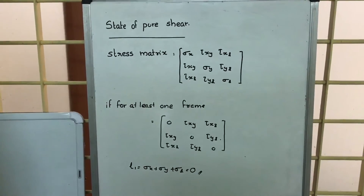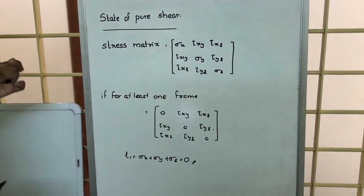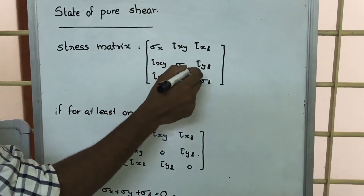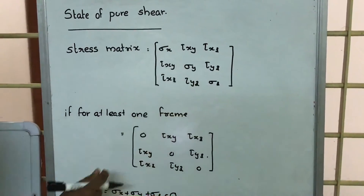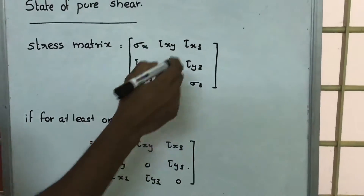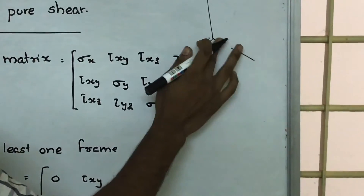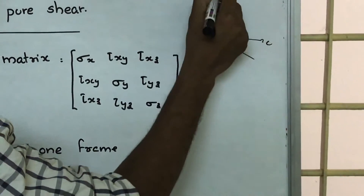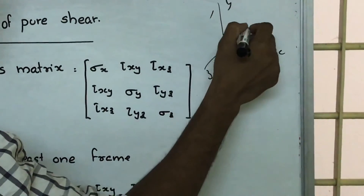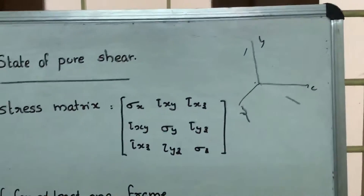In a state of pure shear, for a given point we can write the stress matrix as shown here: sigma x, tau xy, tau xz, tau yz, and sigma z. While defining the stress at a point, we take three mutually perpendicular planes in x, y, z. This is the x-plane because x is the normal of this plane; this is the z-plane since z is the normal; this is the y-plane since y is the normal.